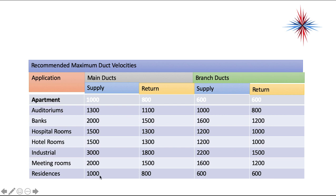Those values vary depending on the use of the building. Velocity has two main effects: if it's too high, it creates a lot of noise; if it's too low, we're not moving enough air and you could have condensation, dust, and dirt buildup in the ductwork. So the velocity needs to be appropriate according to the plans.